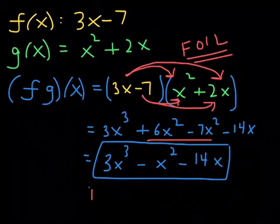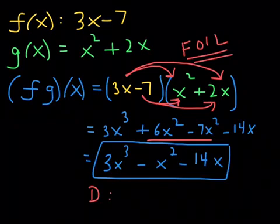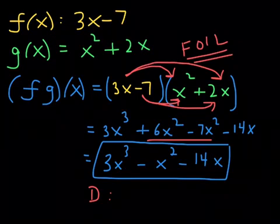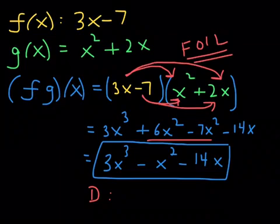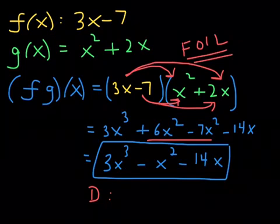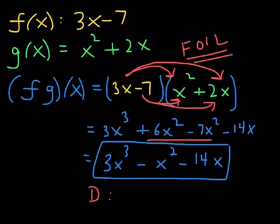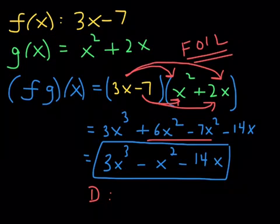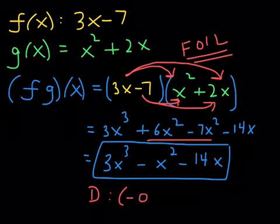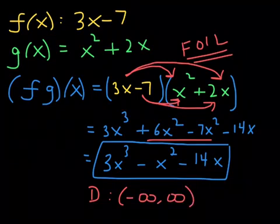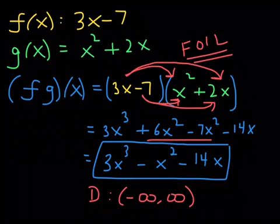This is the product function — what we got when we multiplied the functions together. As for its domain: we graphed this polynomial function in chapter 2. Polynomial function graphs are smooth curves that go forever to the left and forever to the right. Any real number input will produce a real number output, so the domain is all real numbers. If you have a polynomial function, your domain will always be all real numbers.